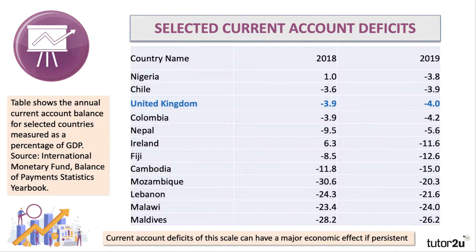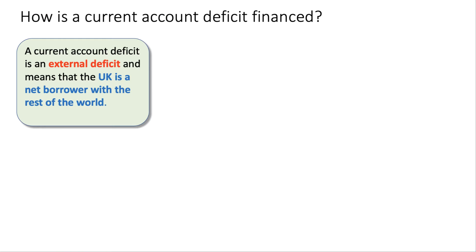This table taken from the latest IMF statistics is really interesting, showing countries with current account deficits. There's the UK figure — the IMF has them slightly lower at 4% in 2019. Countries like Nigeria and Chile run similar-sized deficits. As we go down, there are some countries with substantial deficits well in excess of 10% of their national income. Countries like Mozambique, Lebanon, Malawi, and the Maldives are running external deficits well in excess of one-fifth of their national output — very large current account deficits that raise clear issues about sustainability.